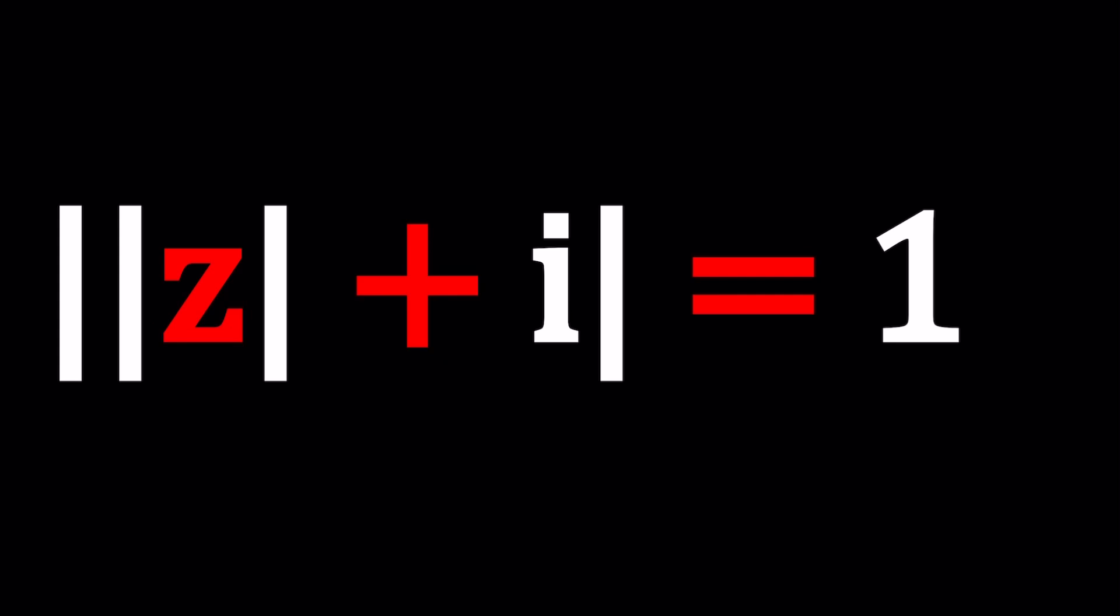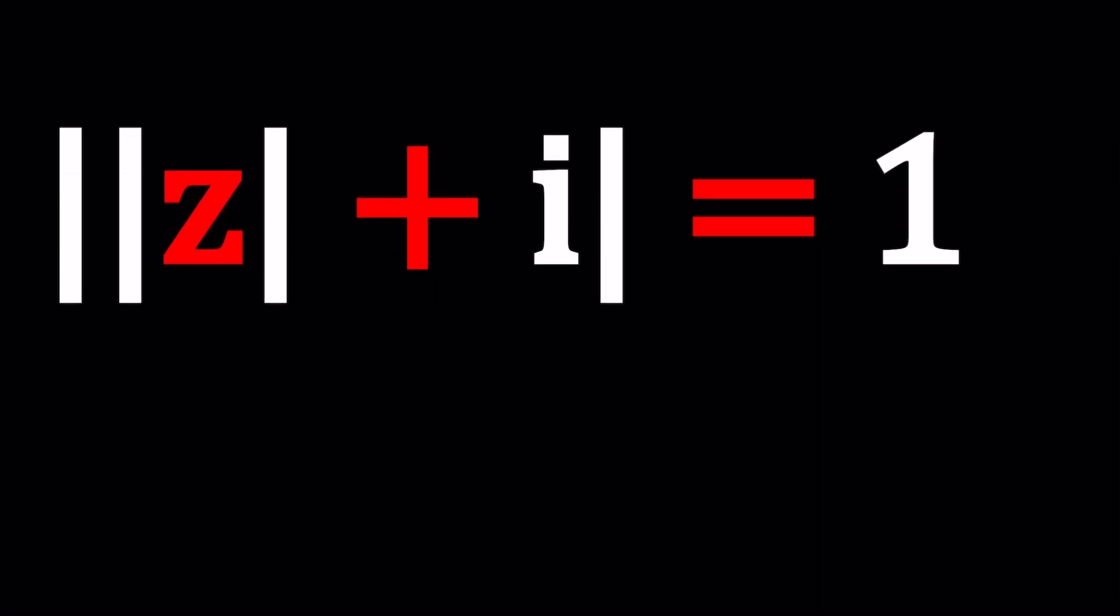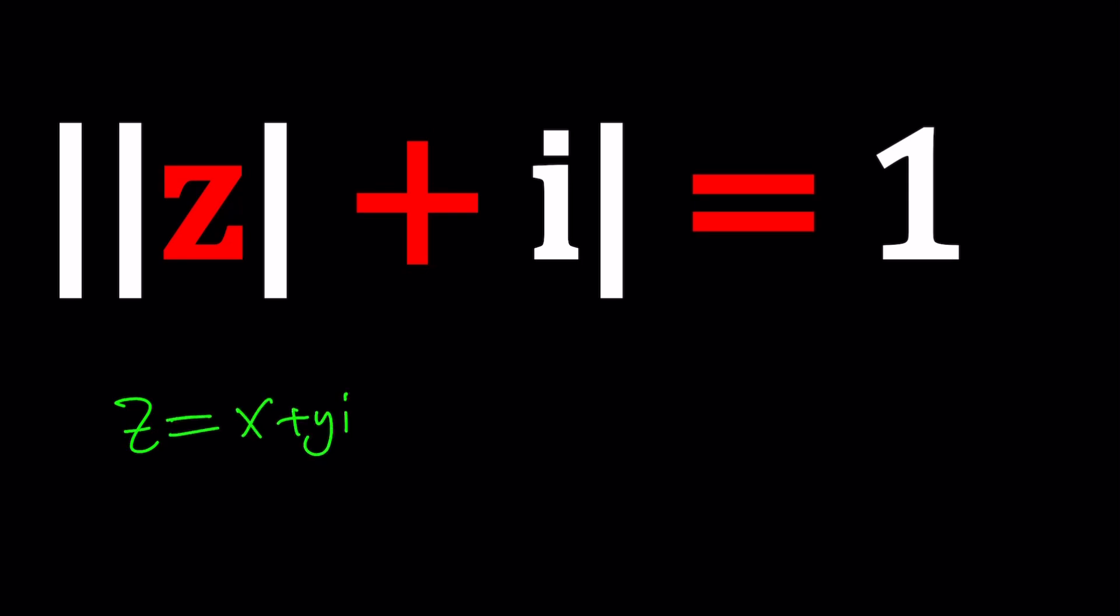So to solve these problems we're going to look at the following. Since we want locus, we're basically looking for a set of points. I want to use X plus Y I. Sorry, A plus B I. We're going to use this for now. If that's the case, what's the absolute value of Z?